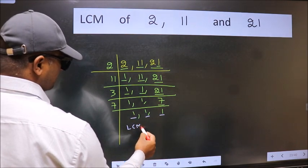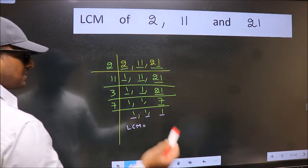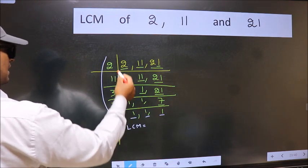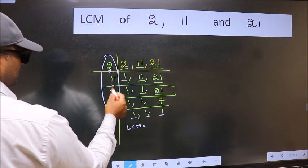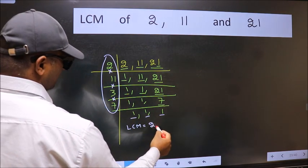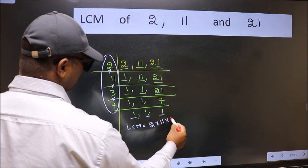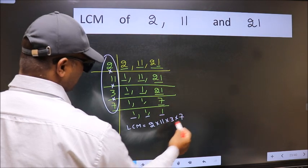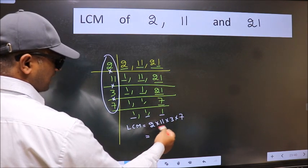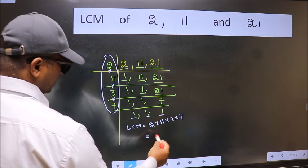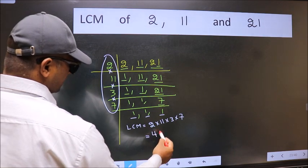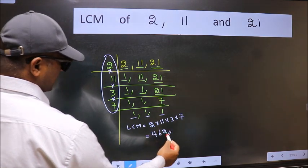So our LCM is the product of these numbers that is 2 × 11 × 3 × 7. When we multiply these numbers we get 462 is our LCM.